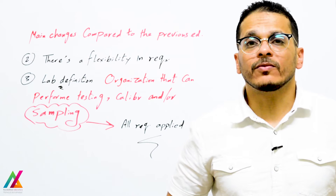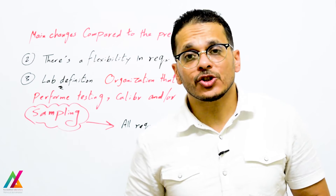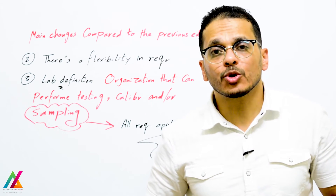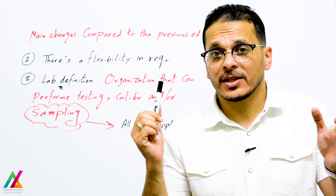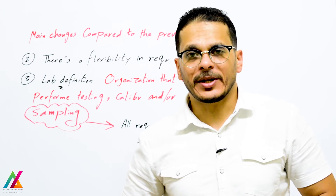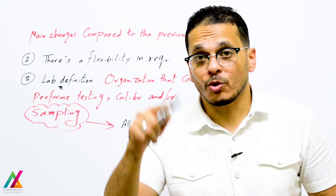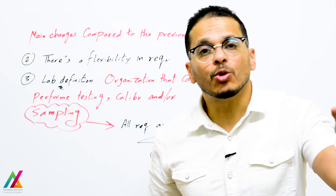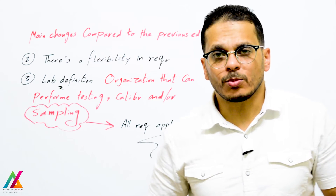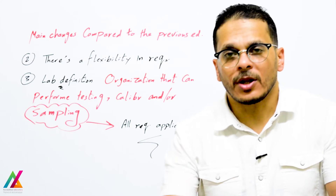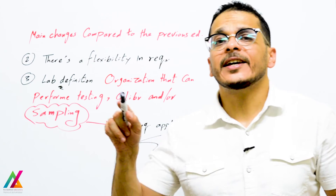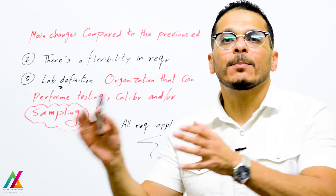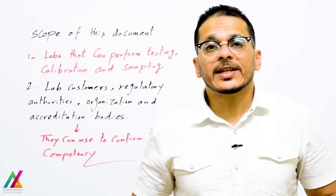Another point added to this edition is the definition of laboratory. A laboratory is now defined as an organization that can perform testing, calibration, and/or sampling. If the lab is responsible for sampling, they shall apply all requirements of this document to sampling as well — including measurement uncertainty, method validation, and everything applied to testing and calibration. If the lab is not responsible for sampling, they do not need to apply sampling requirements, but in the final report they shall state that the lab is not responsible for sampling and that analysis is based on the sample received from the customer.